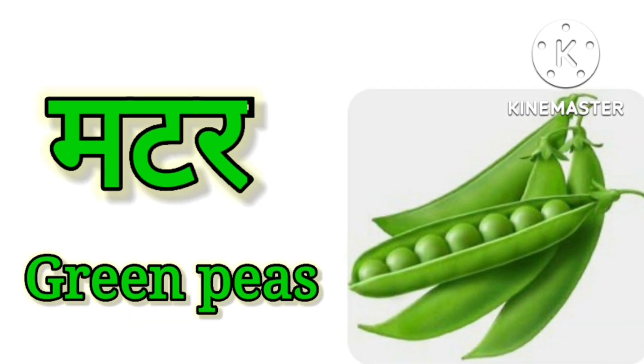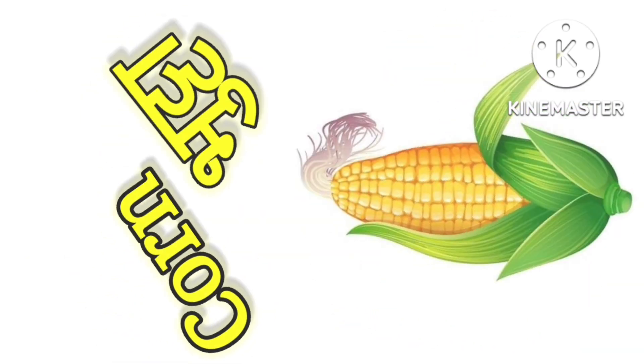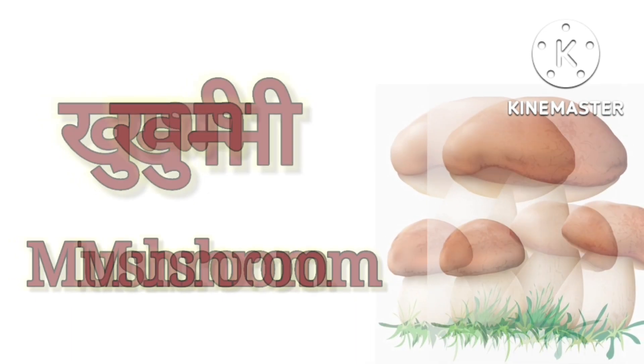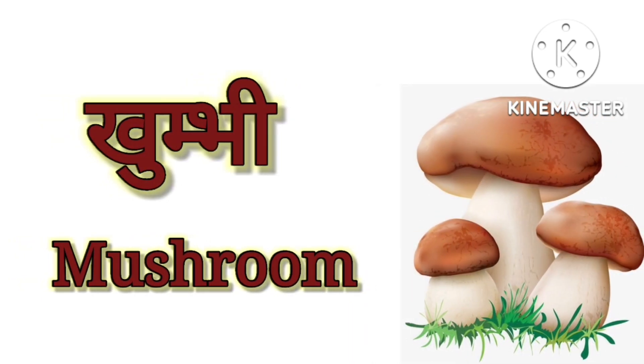Muttar – Green Peas. Buttah – Corn. Kumbi – Mushroom.